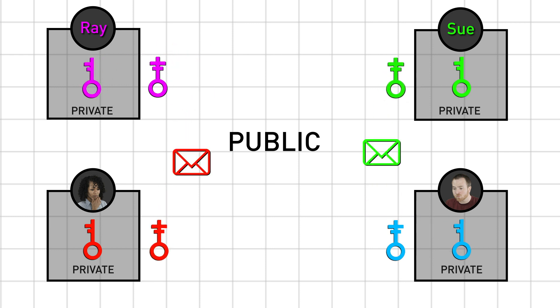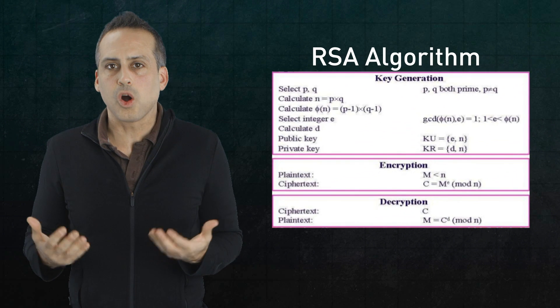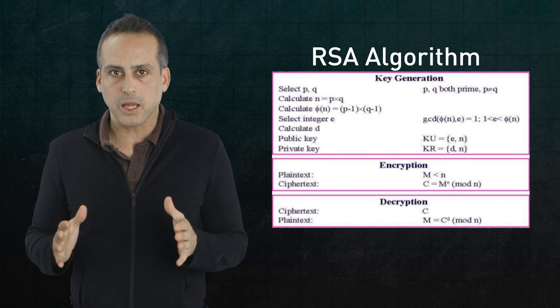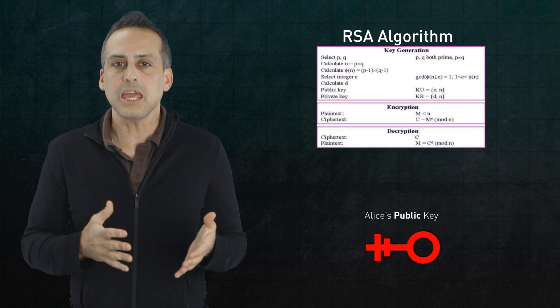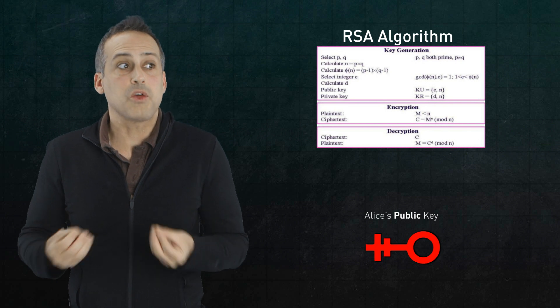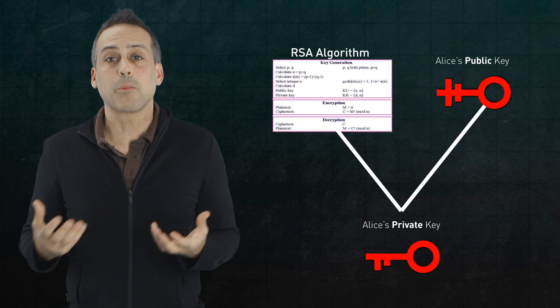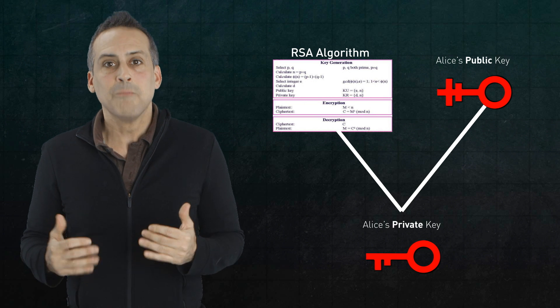But now the nitty gritty, how do we actually generate a pair of keys that function like this? Because the fact that the keys have to be related seems to be a flaw in the system. I mean, if I know the protocol for creating keys, which is public, and I know Alice's public key, which is also public, then there has to be a way to reverse engineer her private key. And in fact, there is, which means that an asymmetric key scheme will only be viable if the math you use under the hood guarantees three things.